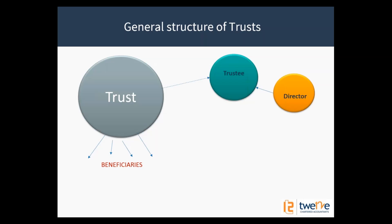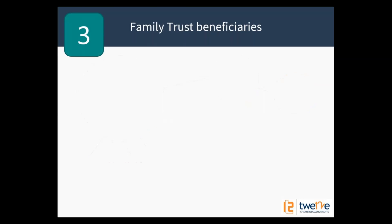Whether it's a unit trust, testamentary trust, family trust or discretionary trust, the structure is pretty much the same. The difference is with a unit trust, each beneficiary has a certain number of units — say 10, 10, 15, 30 — so ownership is determined by those units. Whereas with a family trust or testamentary trust, the distribution to beneficiaries is all determined by the trustee's discretion.